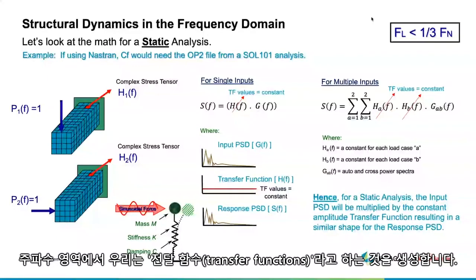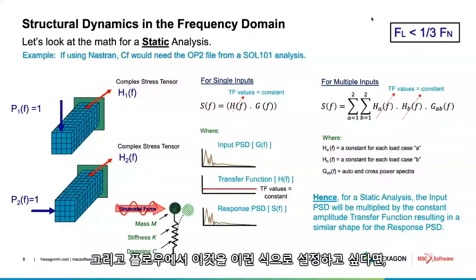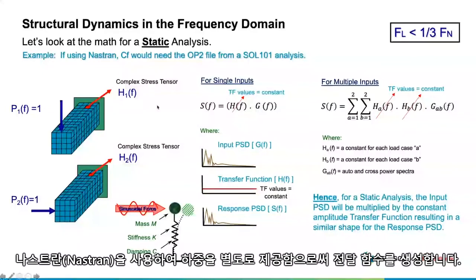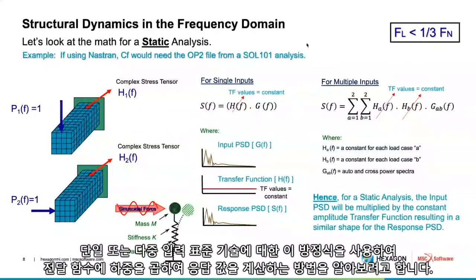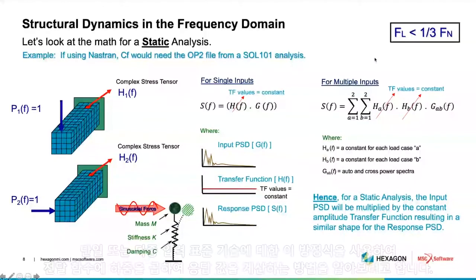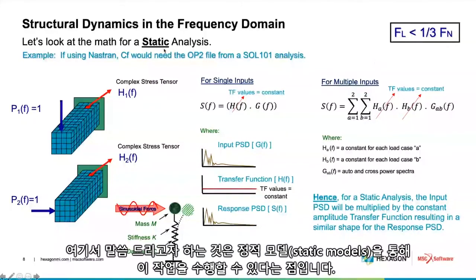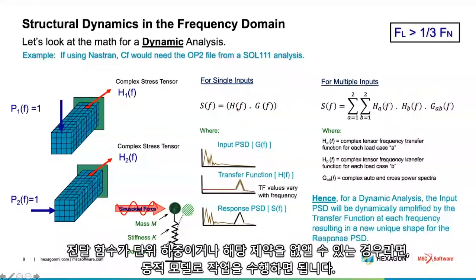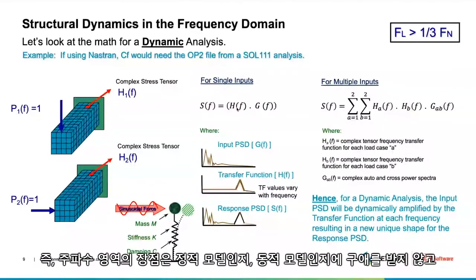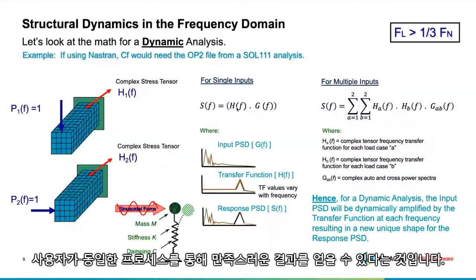This can be done using either a single-input equation or a multi-input equation — standard technology. What I'm showing here is that you can do this for static models, in which case the transfer function is a unit load, or you can remove that restriction and do it for dynamic models. The nice thing about the frequency domain is it doesn't care if your model is static or dynamic — you can follow the same process and get good results.